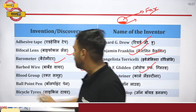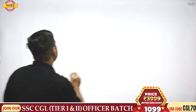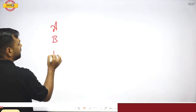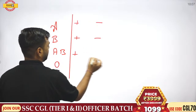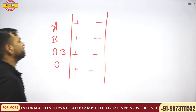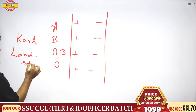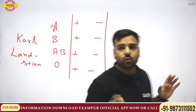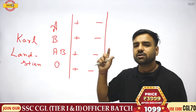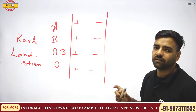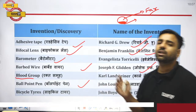Blood groups — there are four types: A, B, AB, and O, plus the Rh factor positive and negative. These blood groups were discovered by Karl Landsteiner. An important exam question: who discovered blood circulation? That was William Harvey — please remember William Harvey.